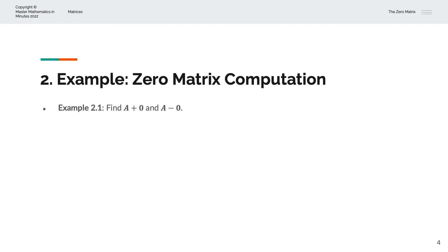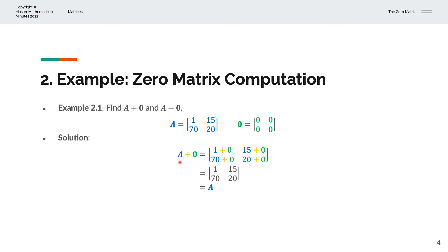In the first example, we're asked to find matrix A plus the zero matrix, as well as matrix A minus the zero matrix. For matrix A plus the zero matrix, we sum the corresponding elements: 1 plus 0, 15 plus 0, and so on. That simplifies to 1, 15, 17, 20 — which is the original matrix A. We've shown that an original matrix plus a zero matrix is itself.